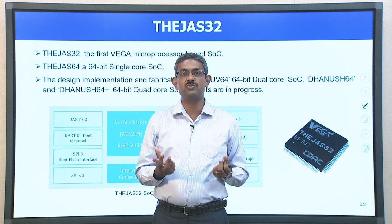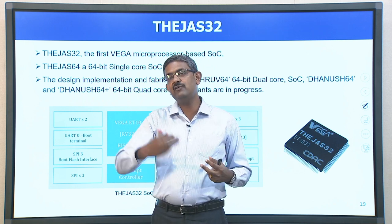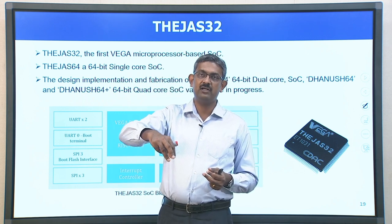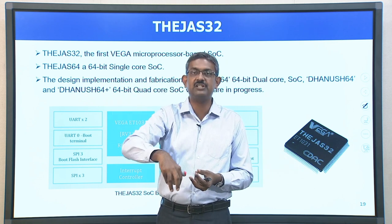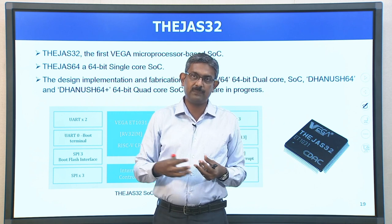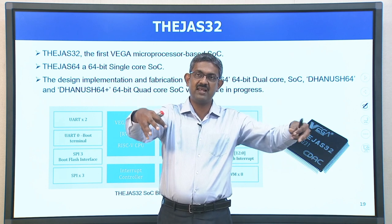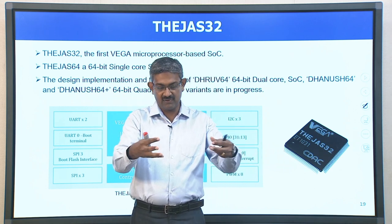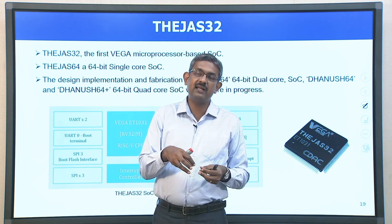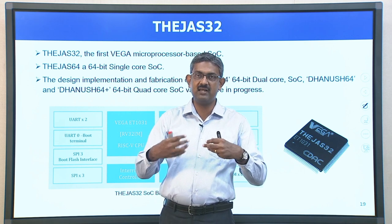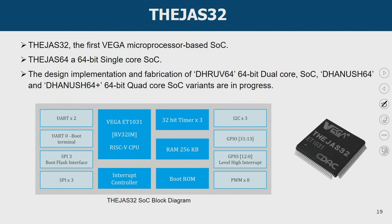What we learned till now is about the internal architecture and features of a microprocessor. Now, even if you open up your computer or laptop it is not only a microprocessor — there should be an ecosystem in which this microprocessor sits, which we call a board. We need a system on chip wherein this microprocessor is fitted and RAM is connected, along with other memory, I/O, and peripheral devices seamlessly integrated. Once the processor is ready, with only the processor alone we cannot do the task — we need an SOC board. Tejas 32 is the first Vega microprocessor-based SoC.